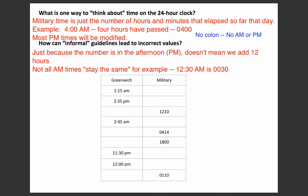Let's look at some examples. 1:15 a.m. — that's early in the morning, so it stays the same. It's 1 hour and 15 minutes into the new day, so we write 0115. Next, 2:35 p.m. — this is not 2 hours into the day; we're in the afternoon. So I add 12 hours to the 2 hours and get 1435.